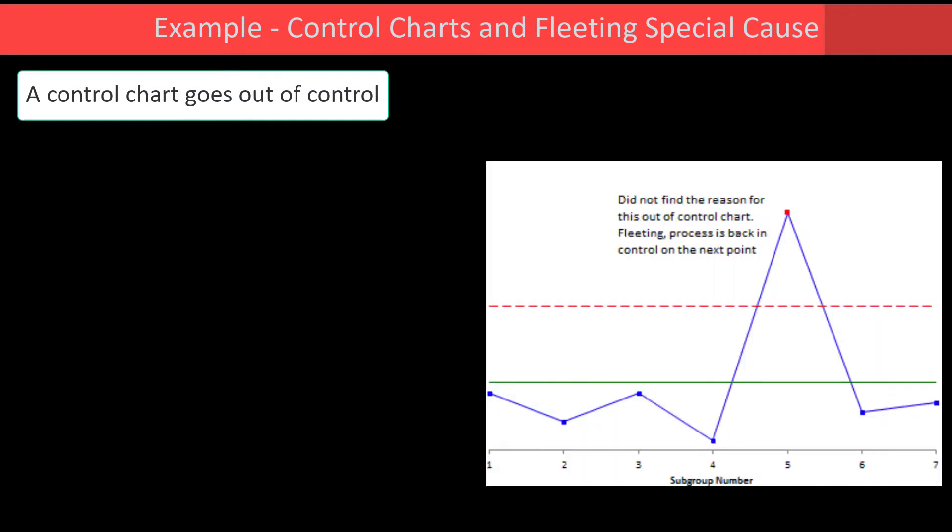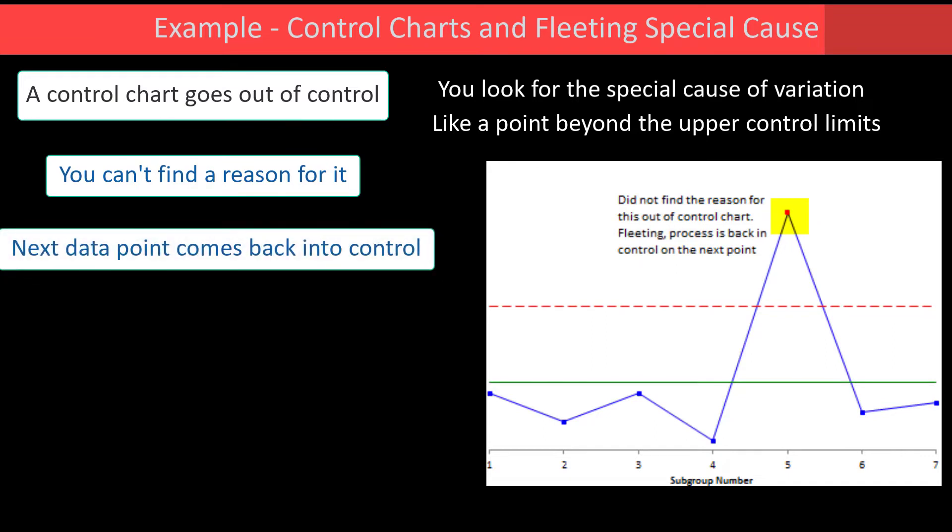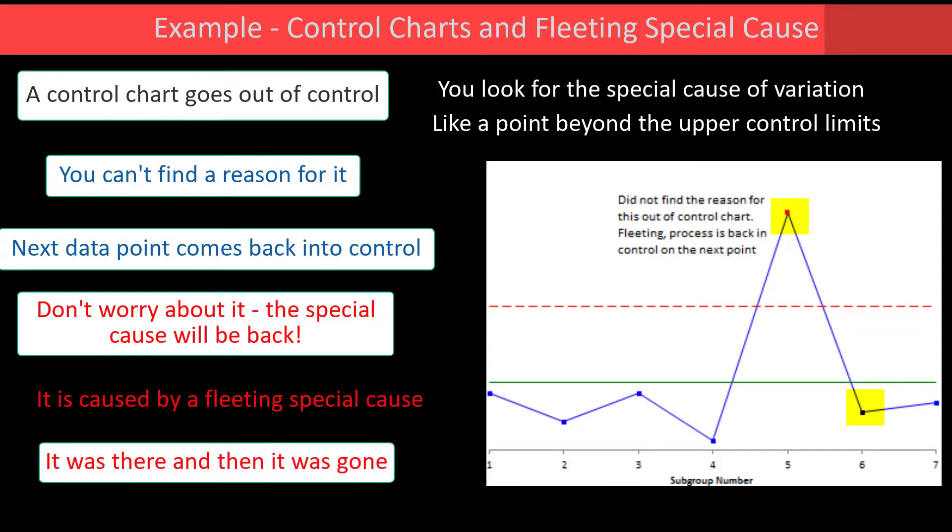Now what happens if your chart goes out of control? You're going to look for the special cause of variation. You don't find it. You have a point beyond the control limits, you go look for the reason and you can't find it. Take another data point and it comes back into control. So what do you do? Well, you don't worry about it. That special cause will come back eventually. It was caused by a fleeting special cause. It was there, then it's gone, and you didn't catch it.